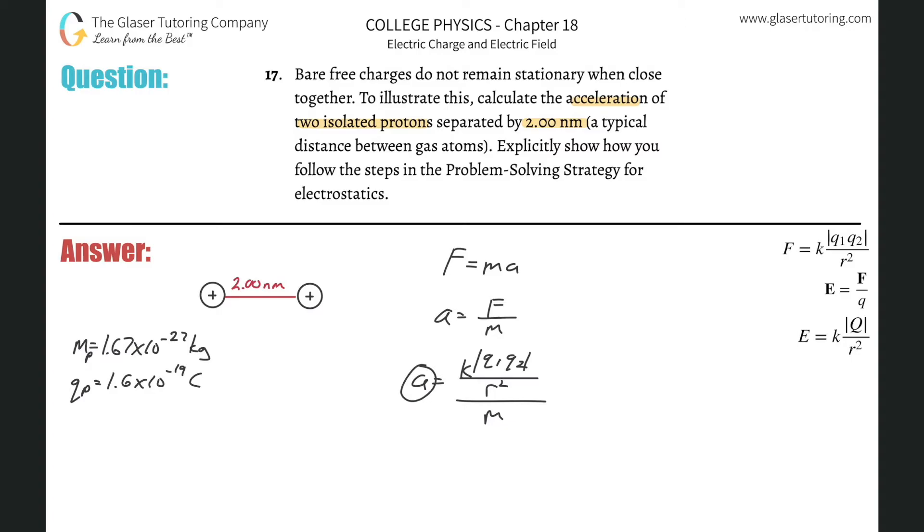And this whole thing is then divided by the mass of the proton. Remember, if I'm trying to find the acceleration of a proton, I got to find the force on the proton, and then I'm going to use the mass of the proton. Consistency is key.